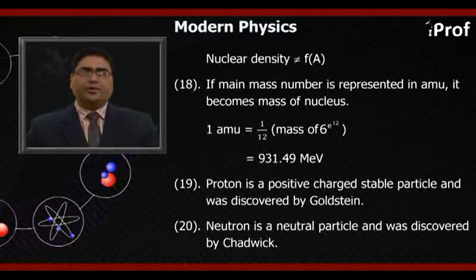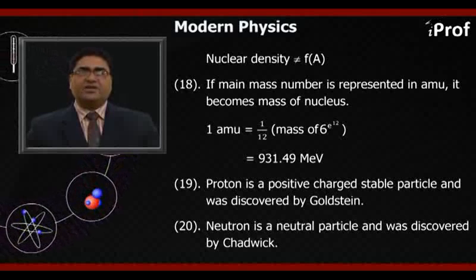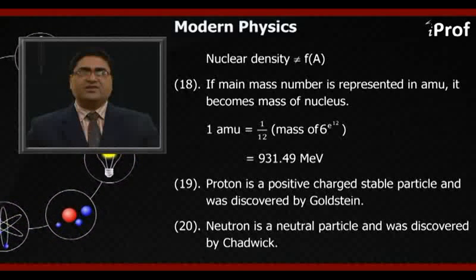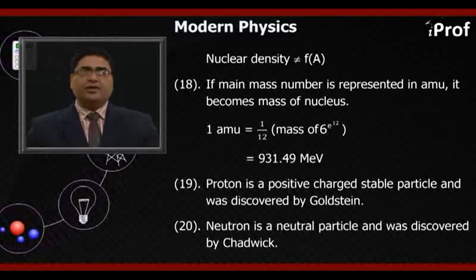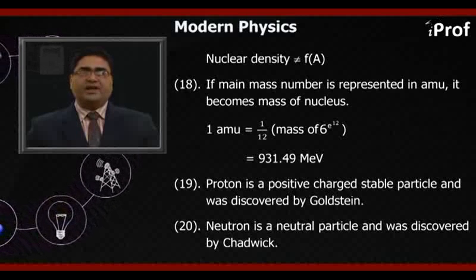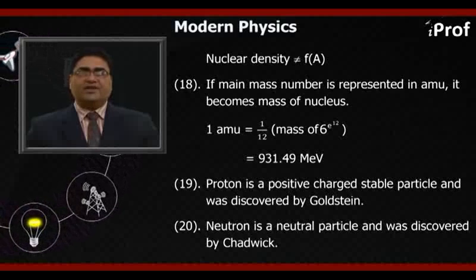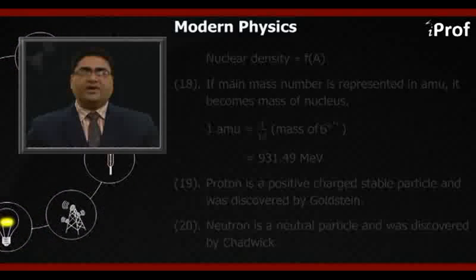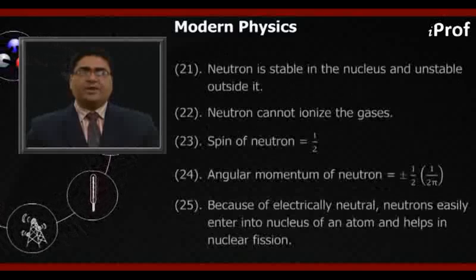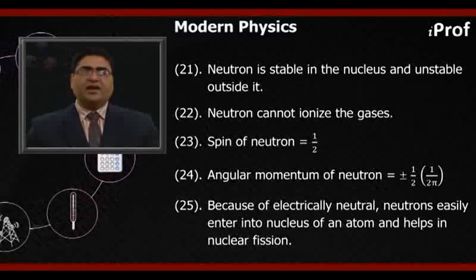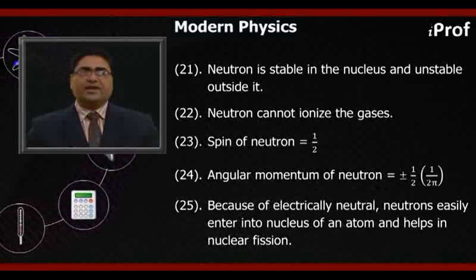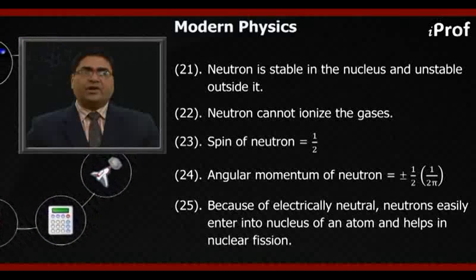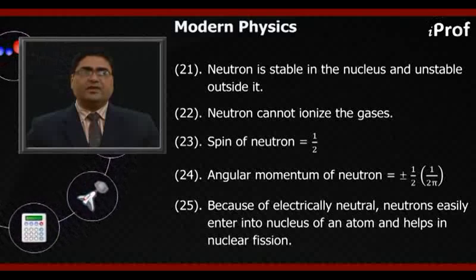Nineteenth, proton is a positive charge stable particle and was discovered by Goldstein. Twentieth, neutron is a neutral particle and was discovered by Chadwick. Twenty-first, neutron is stable in the nucleus and unstable outside it. Twenty-second, neutron cannot ionize the gases.